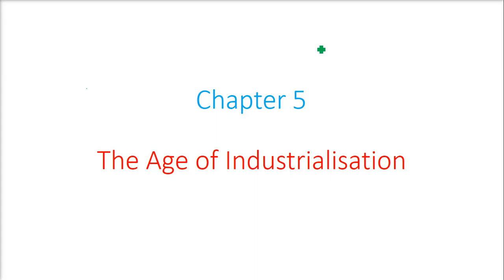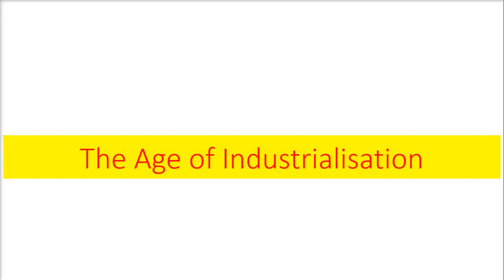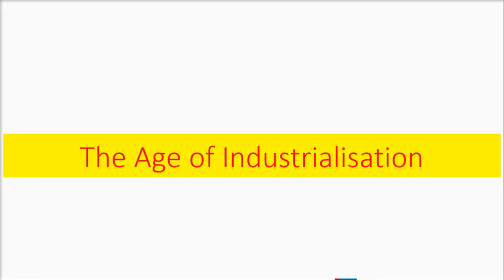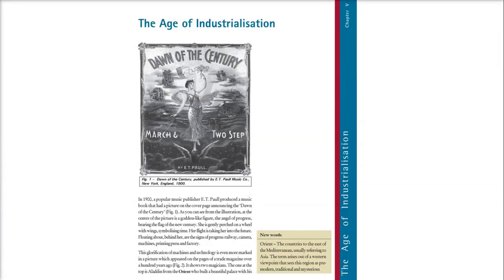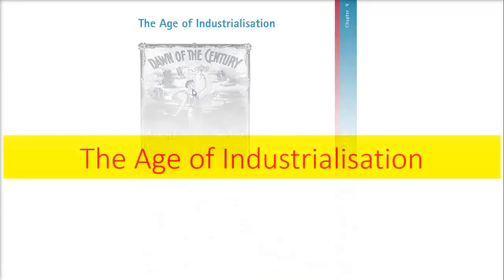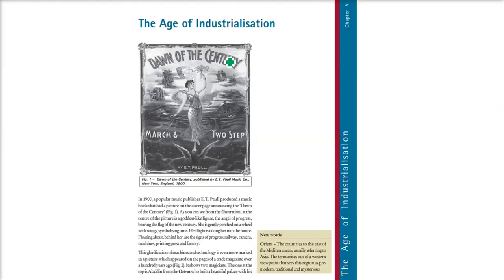This is chapter number 5, the age of industrialization. We are discussing the age of industrialization. What does industrialization mean? The word contains 'industries' — so does it mean industries only, or factories only?